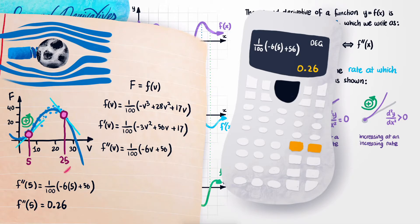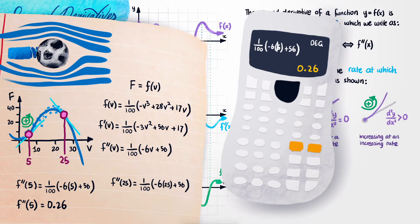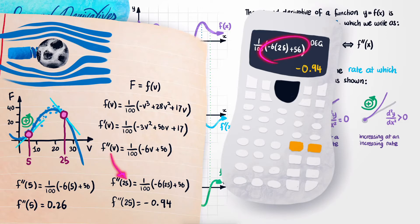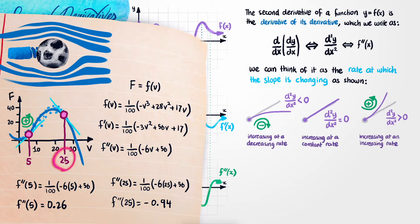Now we can repeat this at the point where v is equal to 25, by replacing all the fives with 25s. I repeated the exact same steps — I substituted v equals 25 into the calculator and found that it was equal to minus 0.94. That means at the point where the velocity is 25, the function is actually decreasing. And because the second derivative is negative, it's decreasing at a decreasing rate.